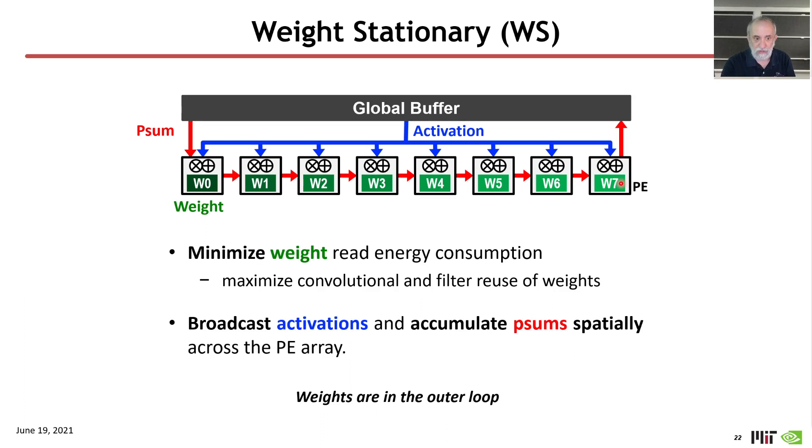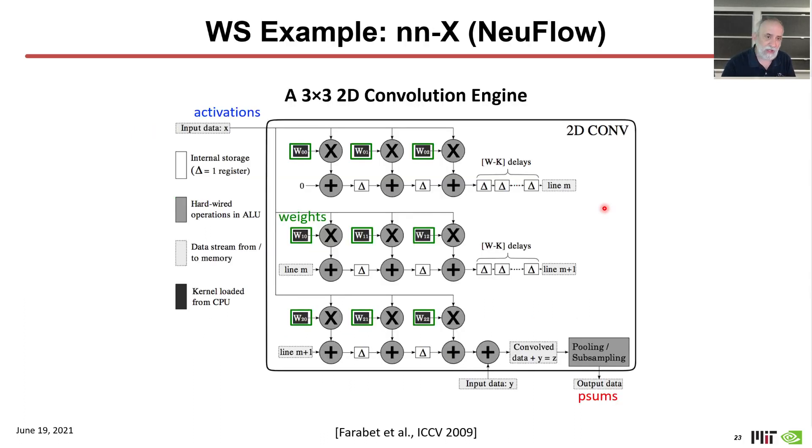And this is actually the kind of design of one of the earlier DNN accelerators, the NeuFlow accelerator, which was a weight stationary design, and it has all of the characteristics we just described. It has a series of weights that are held stationary, the input activations are multicast to all of the units, and the outputs are passed in a pipeline down the line.